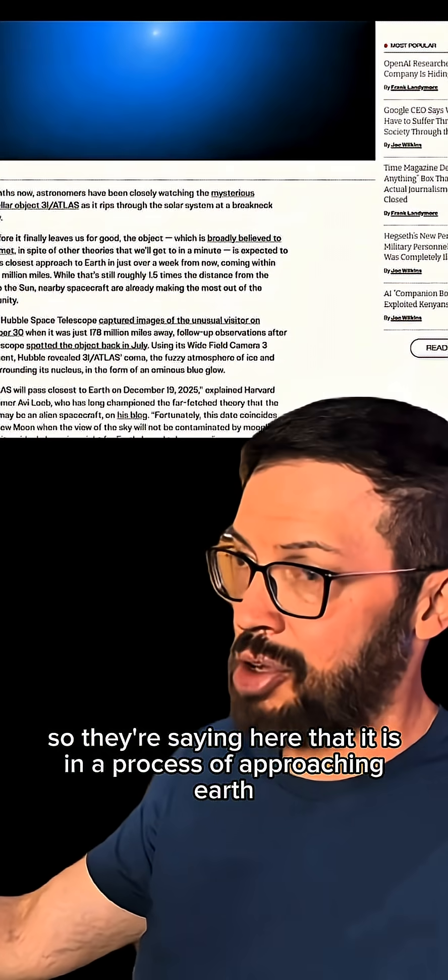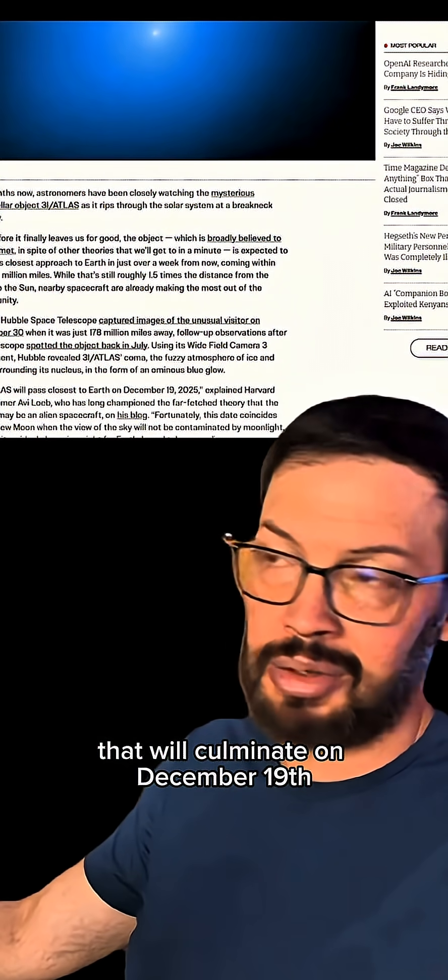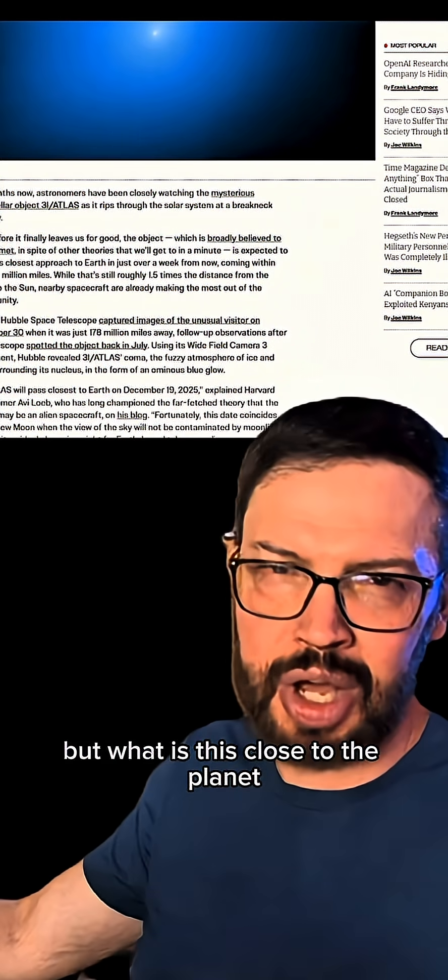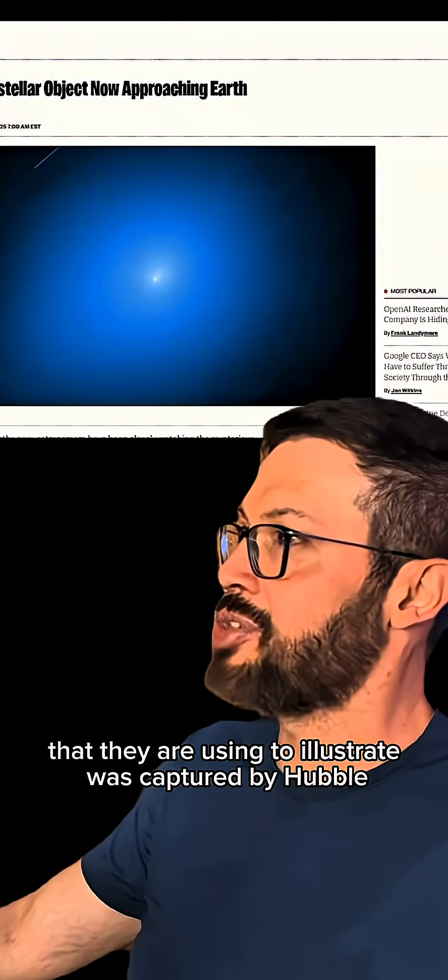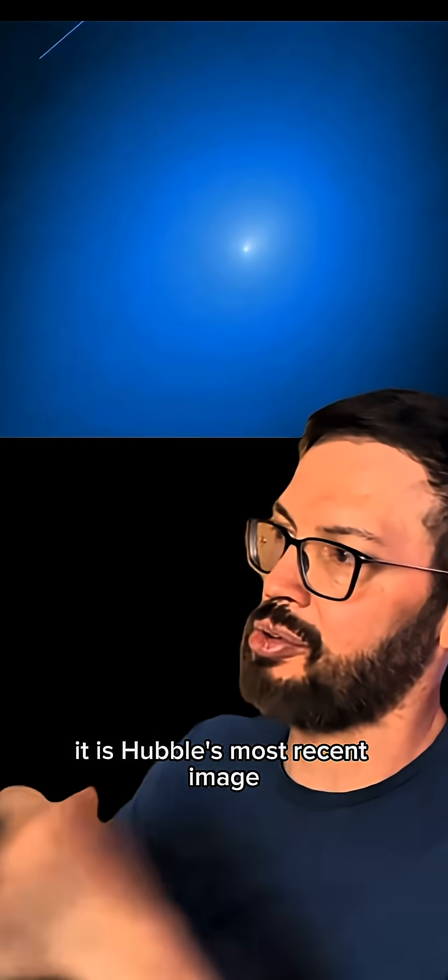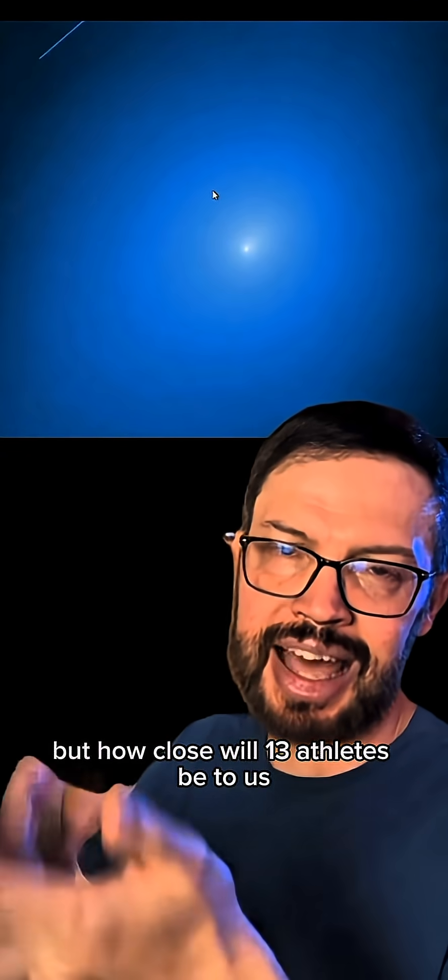So they're saying here that it is in a process of approaching Earth that will culminate on December 19th, when it will be closest to our planet. But what is this close to the planet? This image here that they are using to illustrate was captured by Hubble. It is Hubble's most recent image. But I'll explain about the image later.